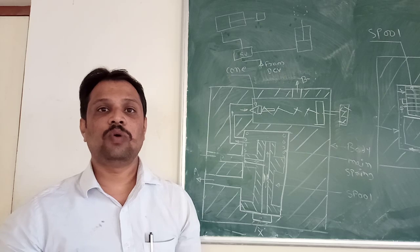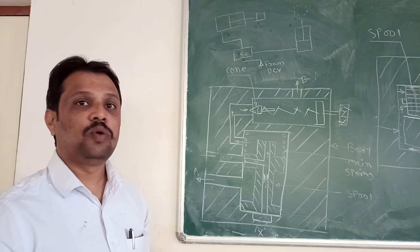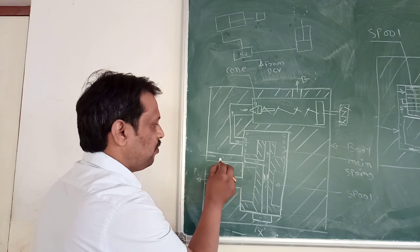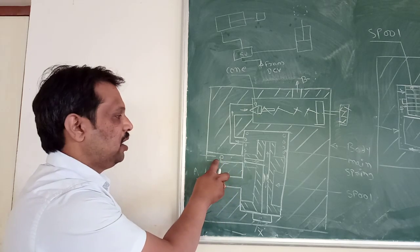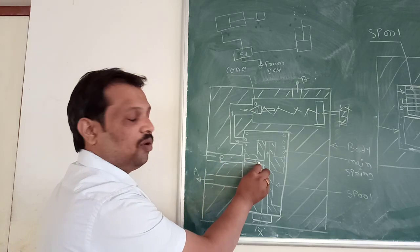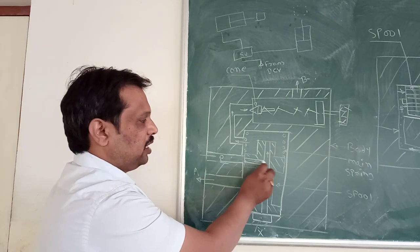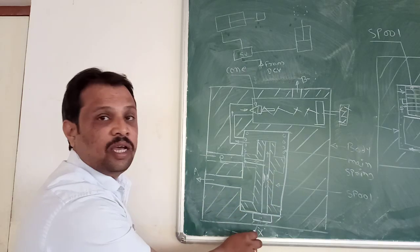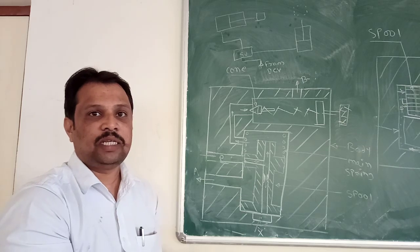Now we will see how this valve is going to operate. First of all, oil will come from port P. Oil goes into this passage here, and after that it goes from the orifice to passage X. Oil will accumulate in the whole passage X.